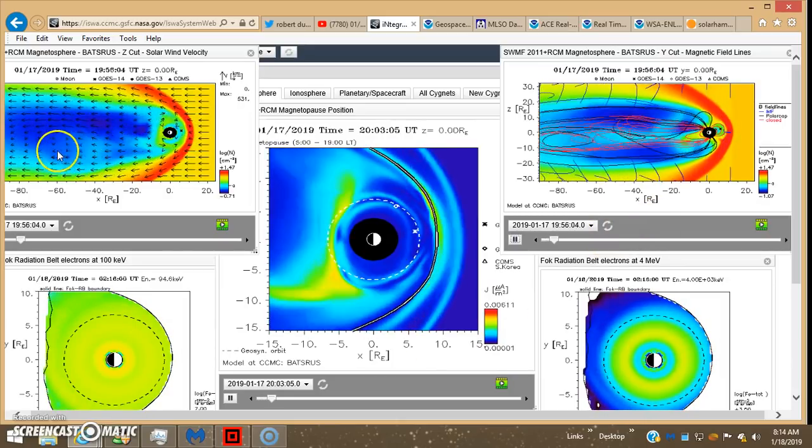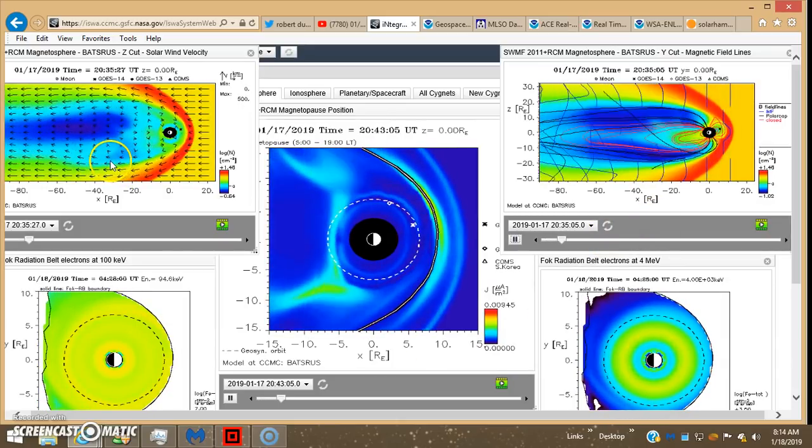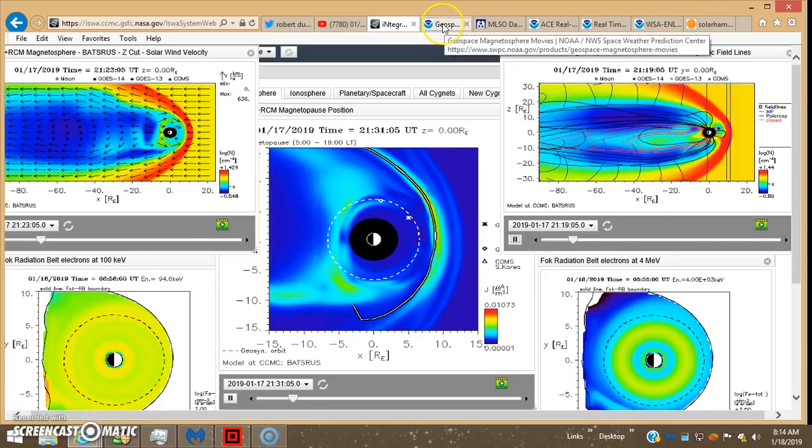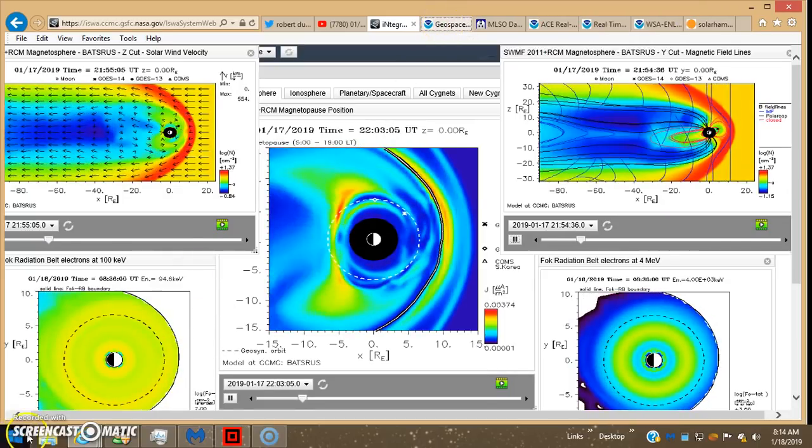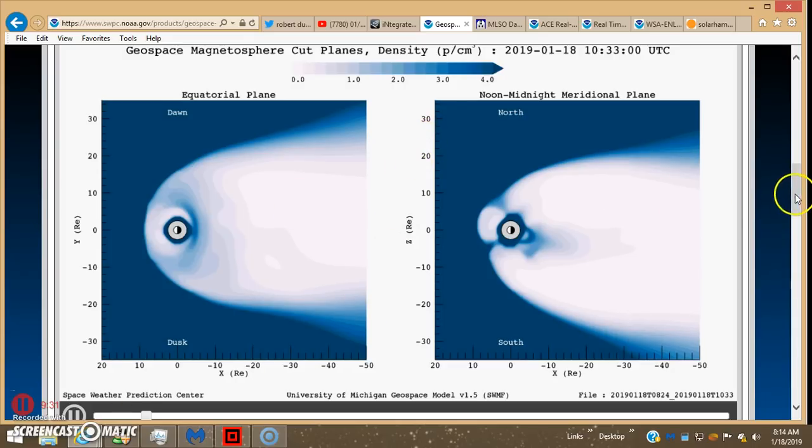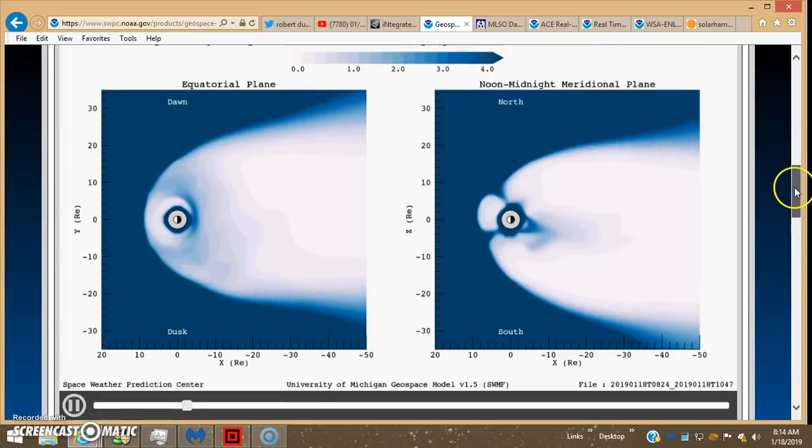So I got those three synced up pretty well. Let's look at the geospace. Geospace, this is the density. So I guess these are all being measured by, this is an RCM model too.